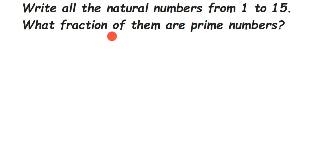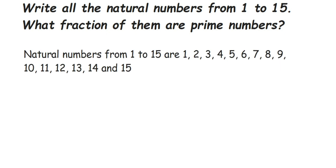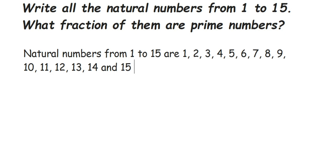Natural numbers are the numbers which start from 1 and keep going to infinity. We just want to write down the natural numbers from 1 to 15, so that will be 1, 2, 3, 4, and so on up to 15. These are the 15 natural numbers from 1 to 15. Now the second thing is we have to find out the prime numbers among them.